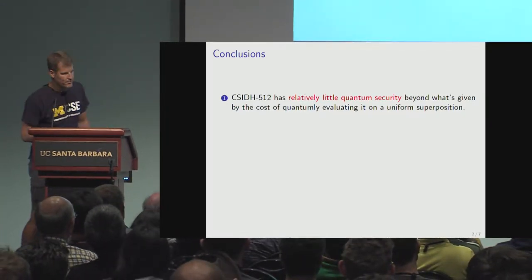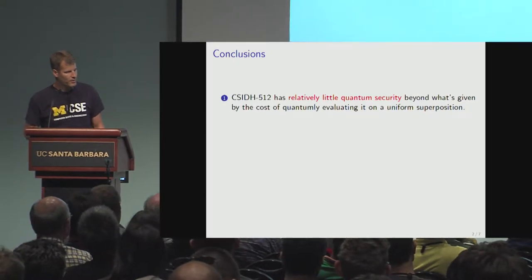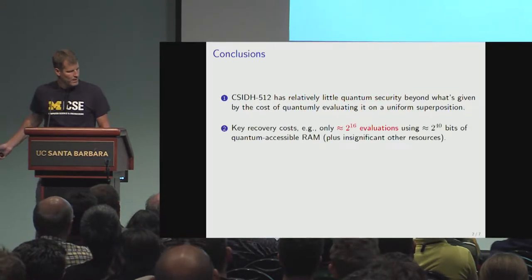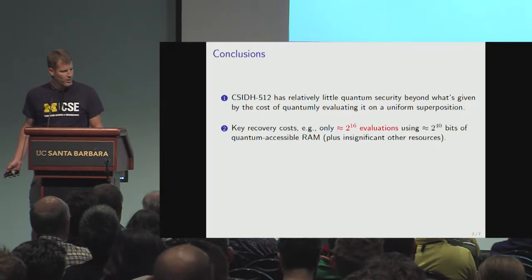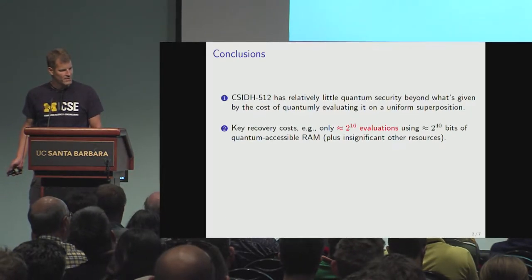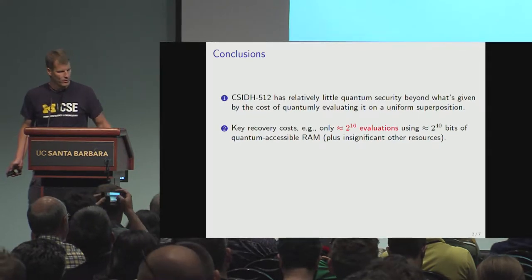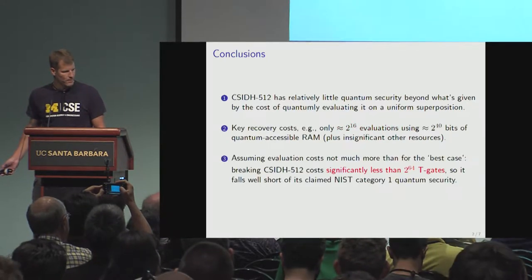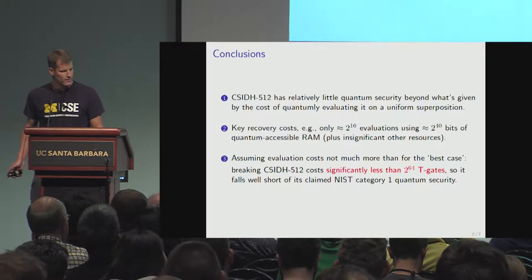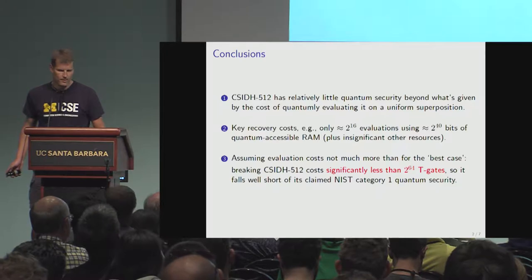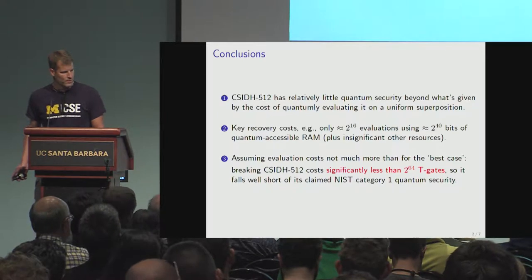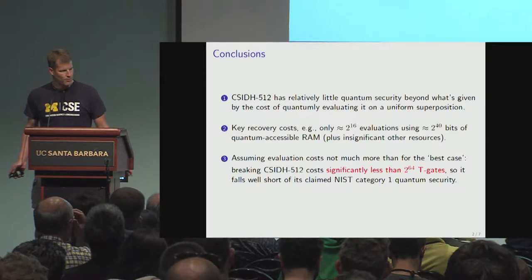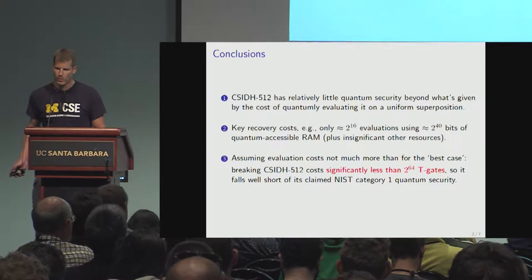The main punchline is that Seaside 512 gives you relatively little quantum security beyond what is coming from the cost of quantumly evaluating it on a uniform superposition. In particular, key recovery costs about 2 to the 16 such evaluations if you have about a terabit of quantumly accessible classical memory — ordinary memory in your laptop that you can query in superposition. When you run the numbers, assuming that the evaluation costs not much more than for the best-case distribution, which is a plausible assumption, breaking Seaside 512 costs a fair bit less than 2 to the 64 T gates, and it therefore falls well short of the claimed NIST Category 1 quantum security level.